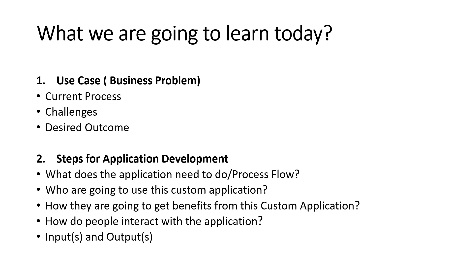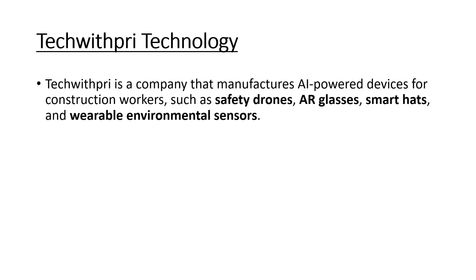Now let's look at the business problem. The company name is Tech with Pri Technology — I love using my own channel name. Tech with Pri is a company that manufactures AI-powered devices for construction workers, such as safety drones, AR glasses, smart hats, and wearable environmental sensors. This is all fictional — I created it to give you a real-world use case idea.